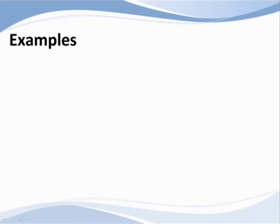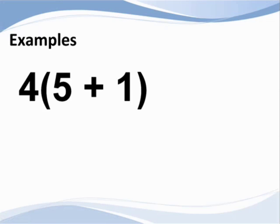How about trying a more difficult example? Suppose we want to compare the expression 4 times the quantity of 5 plus 1, and we want to compare it to 20. In order to compare these two expressions, we have to find a simpler form for the expression on the left. Remember our lesson on the order of operations?